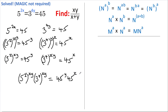Now on the left-hand side we have different bases but the same power. Therefore, by using rule number 3, I can write this as 5 squared multiplied by 3 to the power of 4, all raised to xy.